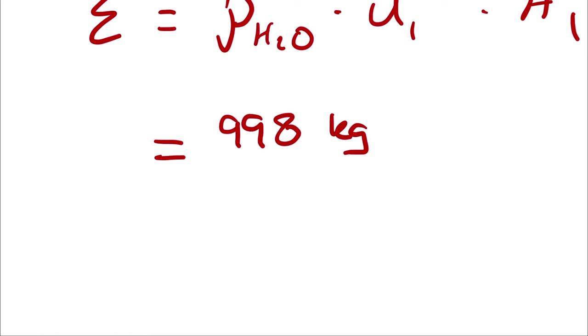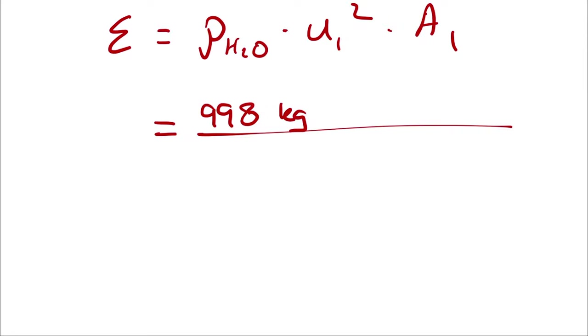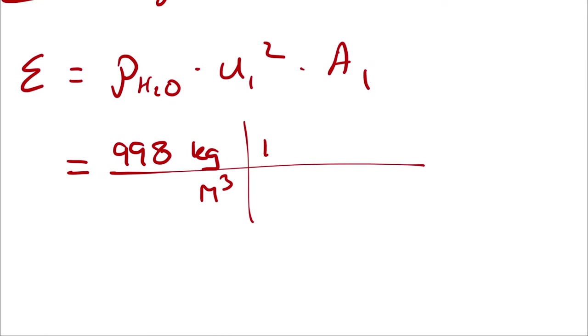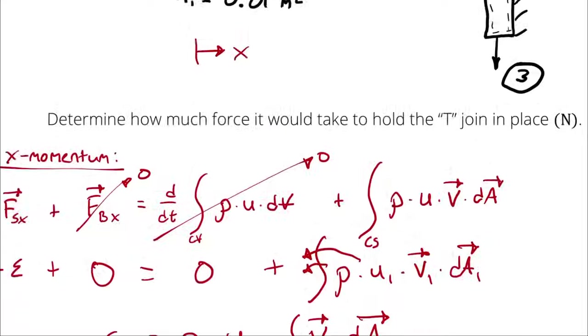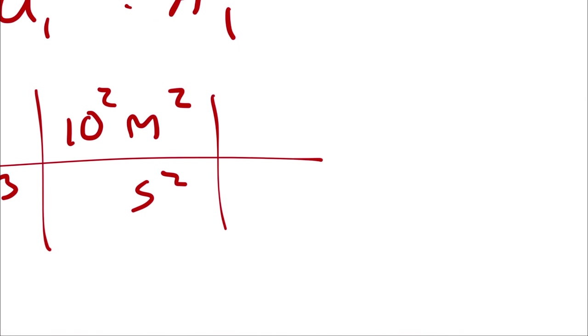So 998 kilograms per cubic meter times 10 meters per second. And then I square everything. And then I multiply by pi over 4 times diameter. Or was I just given area? I was just given area. So I just plug in 0.01 square meters.